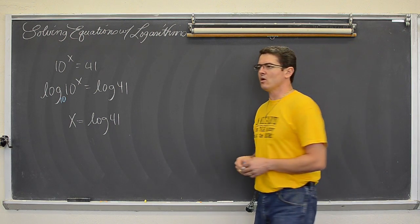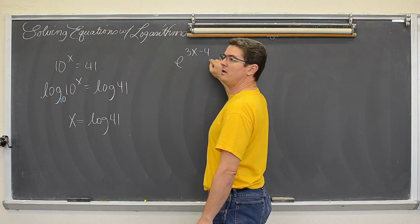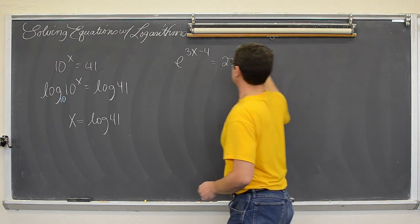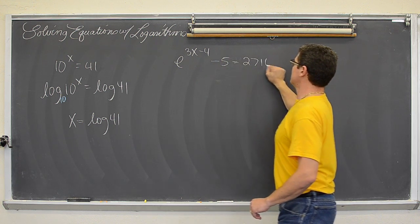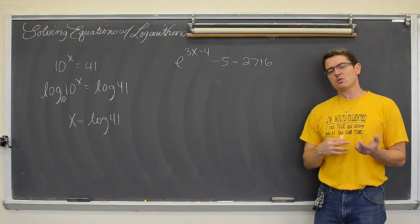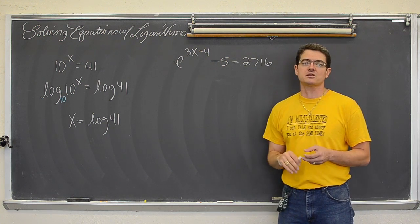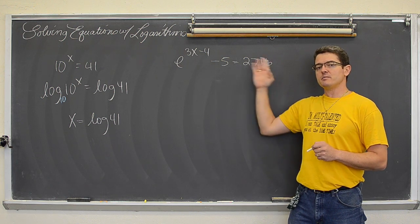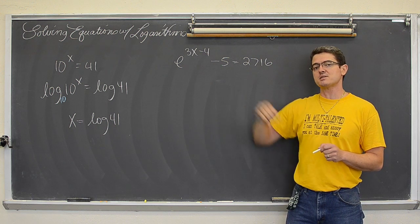Now here is one that takes a little bit more work. e to the 3x minus 4 equals 276. Now we have our variable in the exponent which means that we are going to require logarithms again to solve this equation to get the variable down out of the exponent.